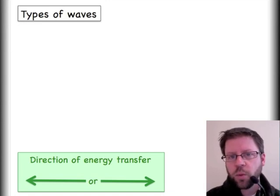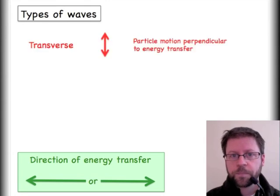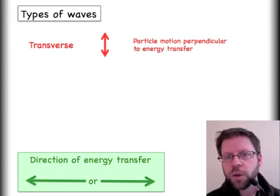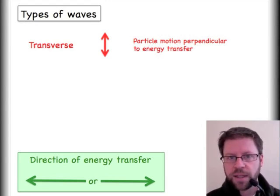Within mechanical waves, so the things that actually need a medium to transport energy, we have different types of classifications. The first is a transverse wave, and this will be much easier to visualize here in a little bit when I show some pictures. But a transverse wave is going to have particle motion that travels in the vertical even though the wave itself is transporting energy in the horizontal.